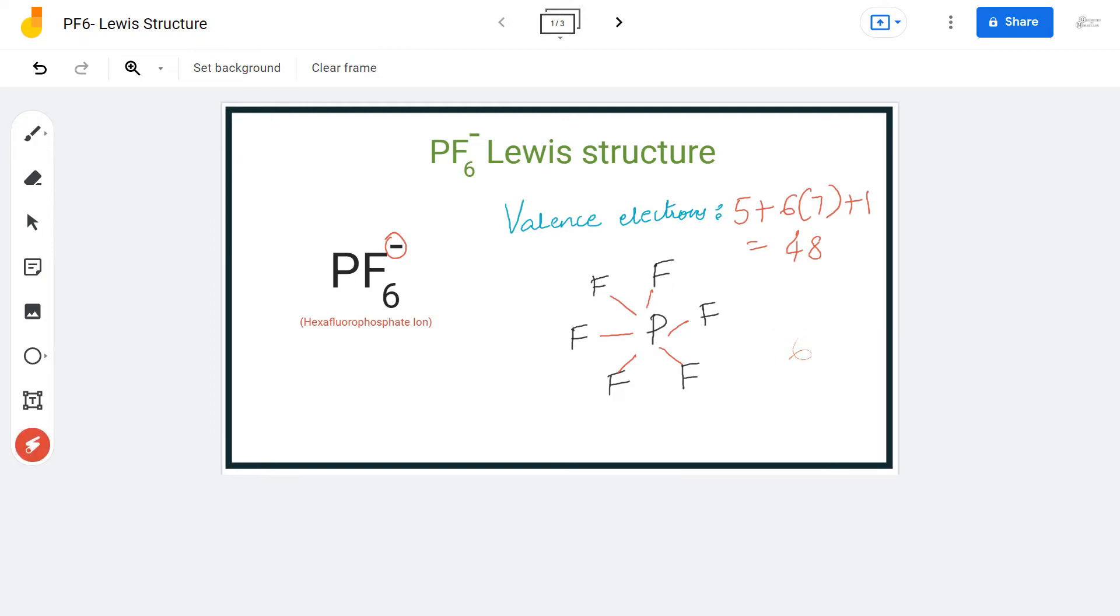If you look closely, each fluorine atom requires six valence electrons to have a complete octet. What we're going to do is place six valence electrons around each fluorine atom. So six times six, we will be using up all our 36 valence electrons.